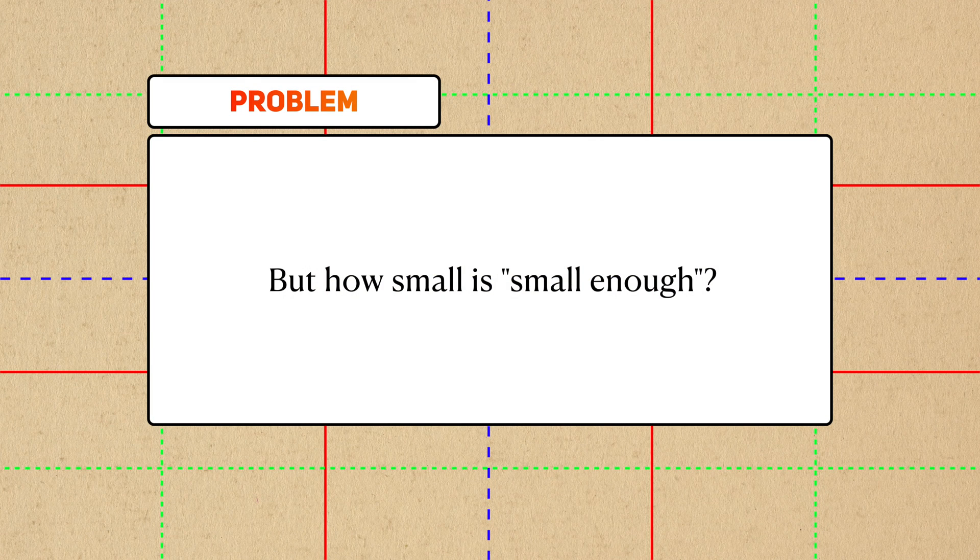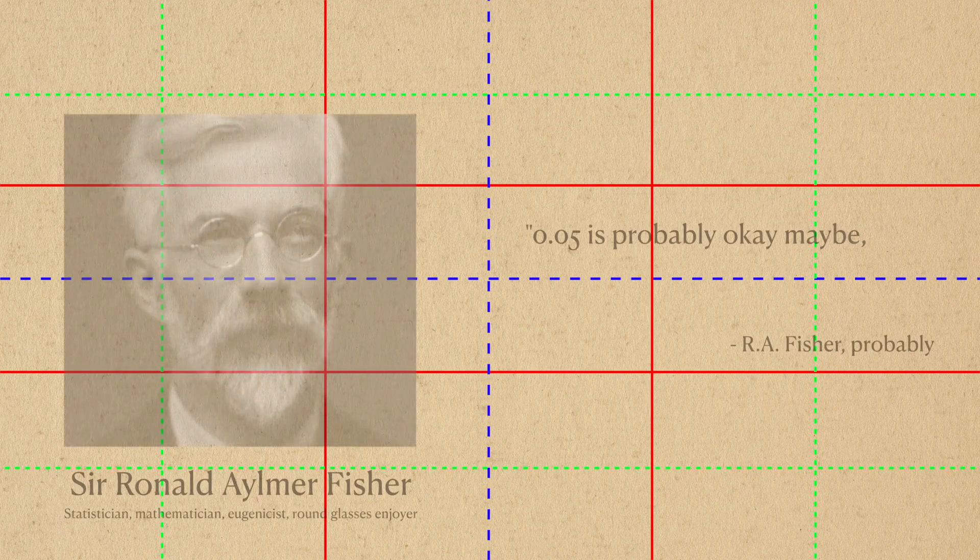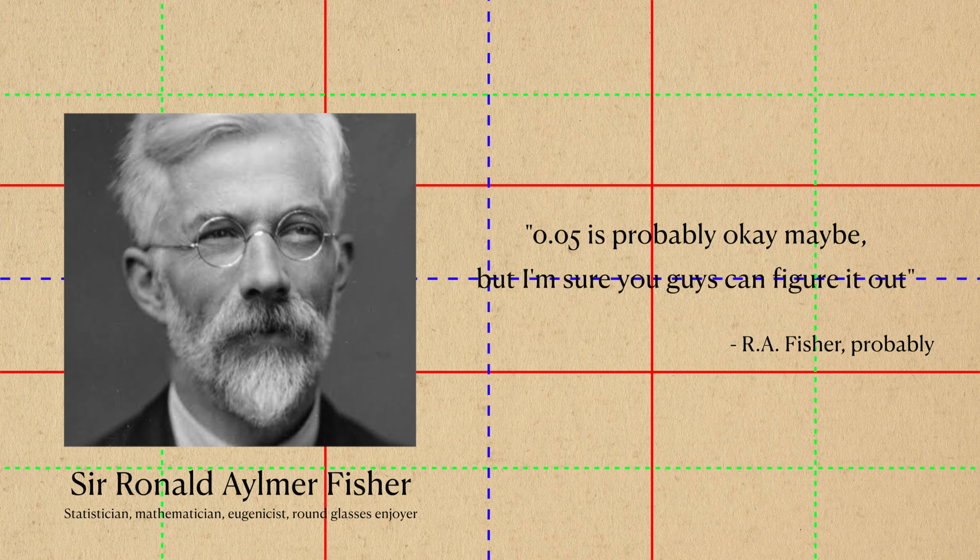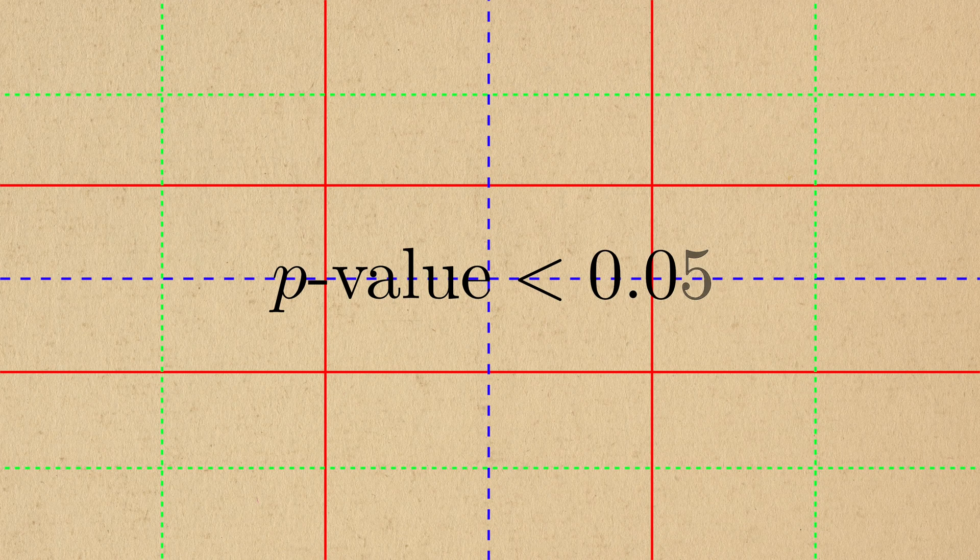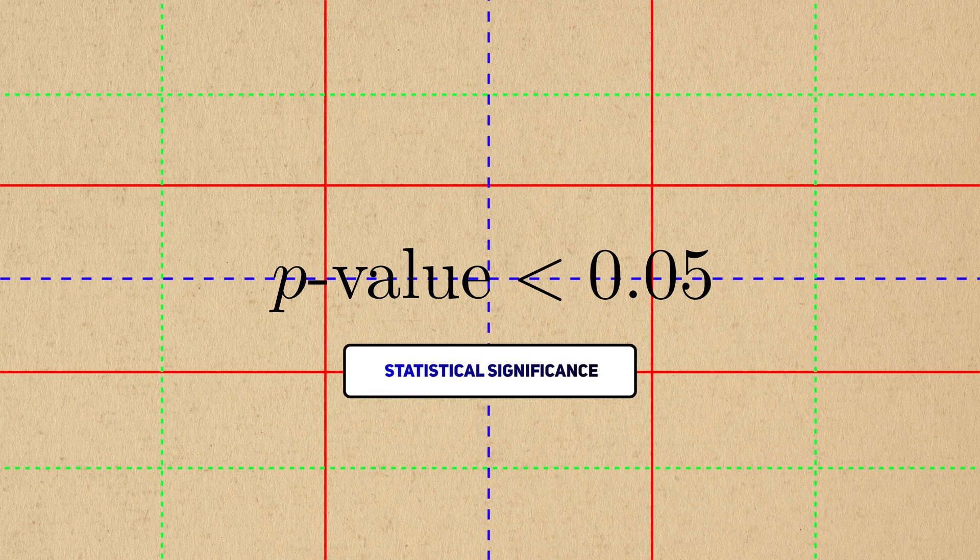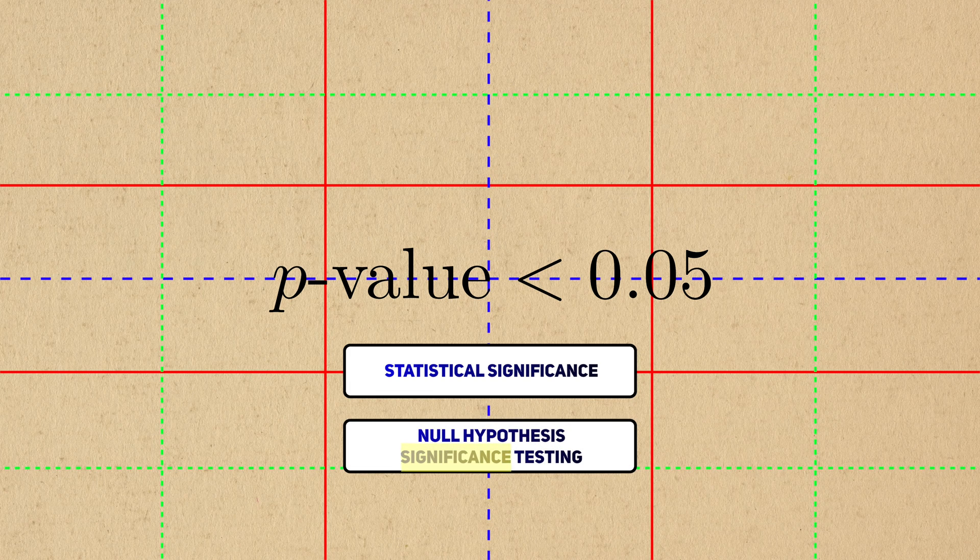But you may ask, what's small enough for your p-value? Fisher recommended a p-value of 0.05 as a cutoff, but also left it up to the researcher to decide what would be low enough. When the p-value is below 0.05, we say that the result is statistically significant. And this is where the word significance comes up in NHST.